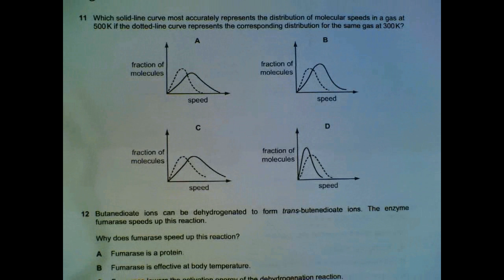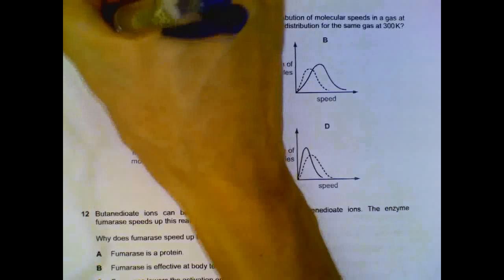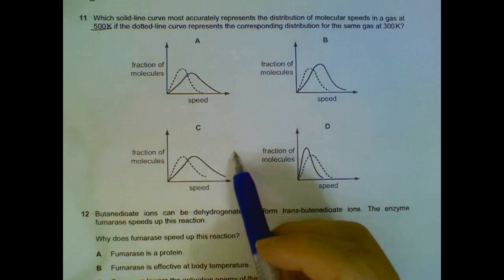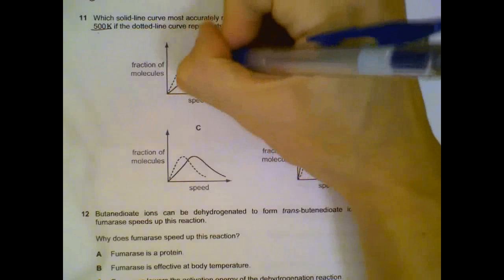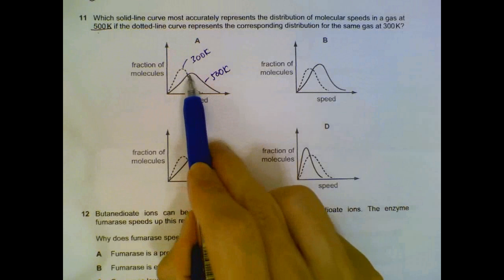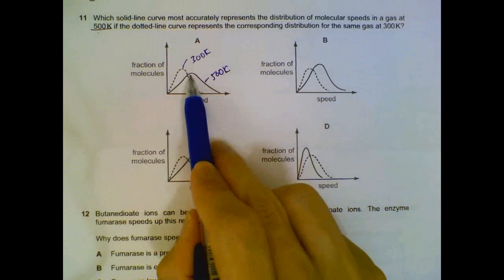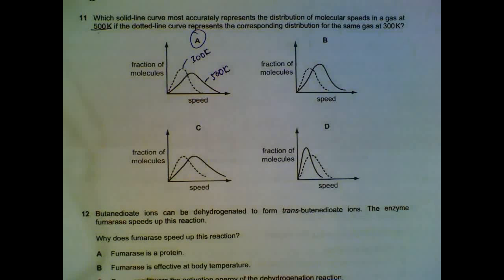If the solid line is at 500 K and the dotted line is at 300 K, the higher temperature peak should be shifted to the right and at a lower level. So the solid line at 500 K has its peak to the right and lower — that is the graph representing these conditions.